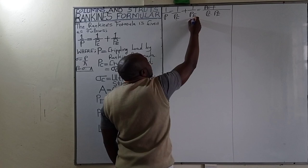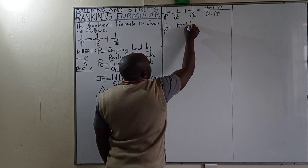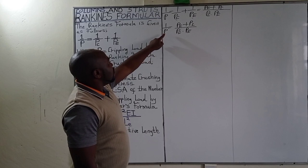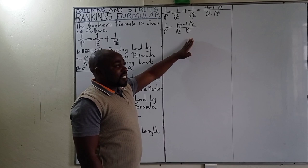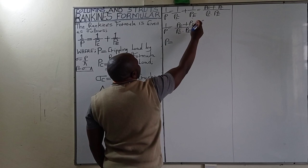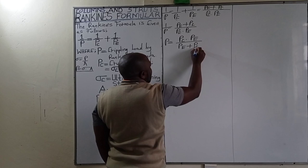So we have 1 over P equal to Pe plus Pc divided by Pc times Pe. The reciprocal of 1 over P is P, so taking the reciprocal of both sides gives us P equal to Pc times Pe divided by Pe plus Pc.